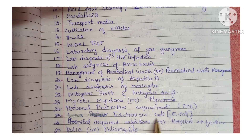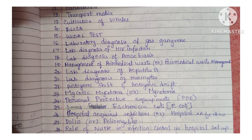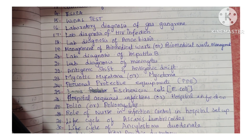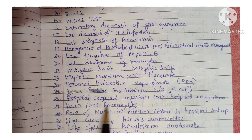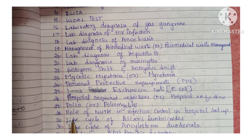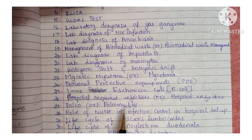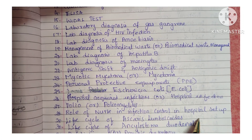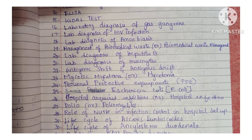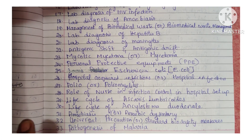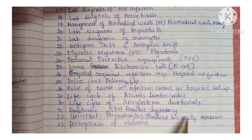Next: E. coli or Escherichia coli. Next: hospital acquired infections or hospital infections. Next: polio or poliomyelitis — asked either way. Next question: role of nurse in infection control in hospital setup. Next question: life cycle of Ascaris lumbricoides. Next question: life cycle of Ankylostoma duodenale. Amoebiasis or amoebic dysentery.